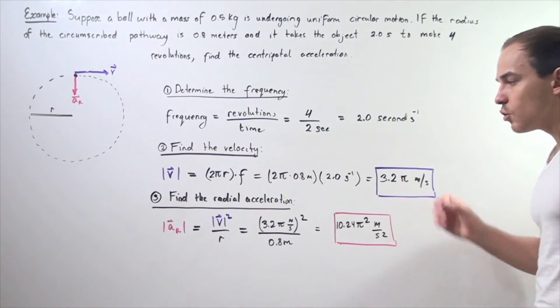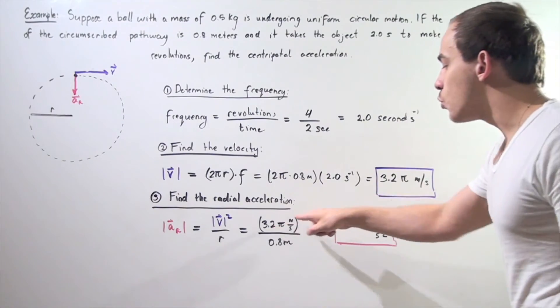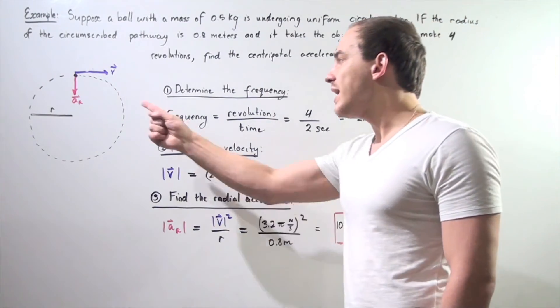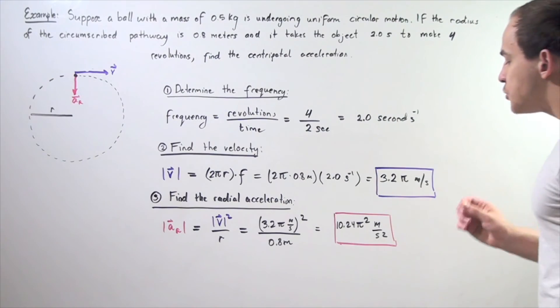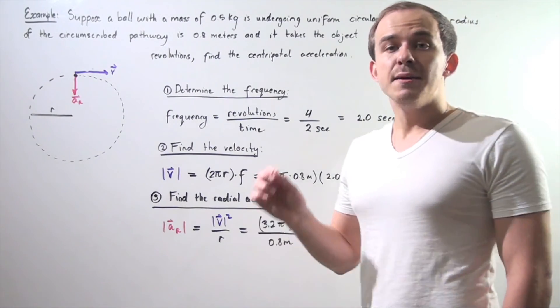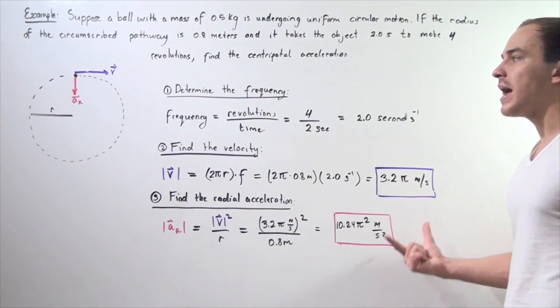the magnitude of radial acceleration. We simply take this value, square it, and divide it by our radius, 0.8 meters. We get 10.24π² meters per second squared. This is the magnitude of our acceleration.